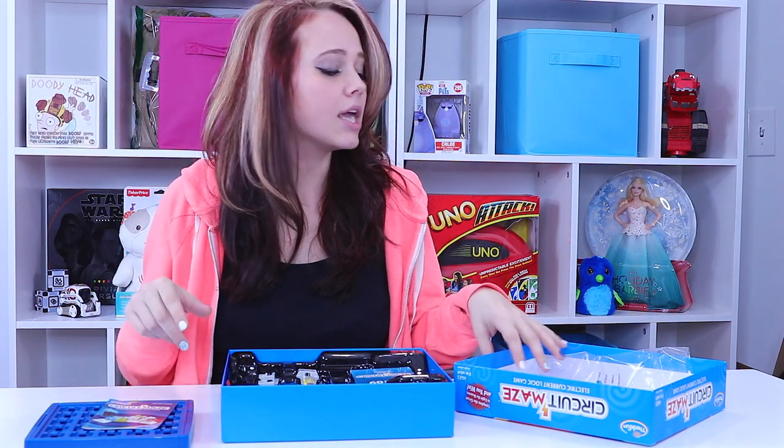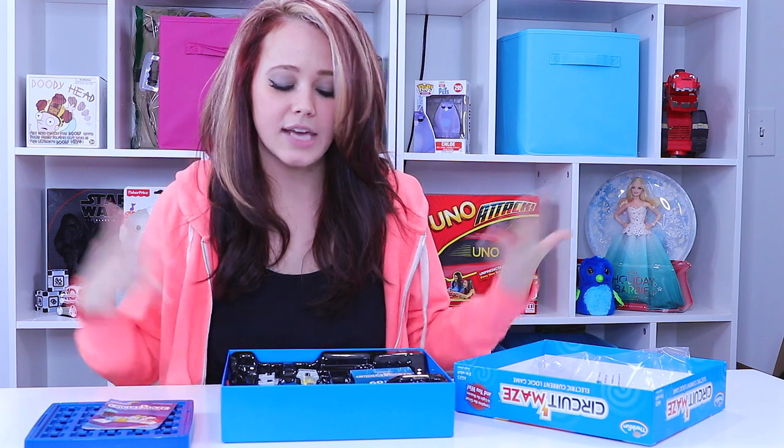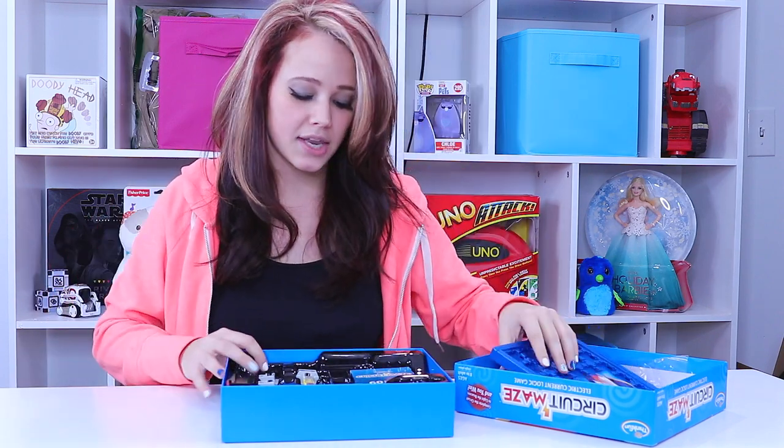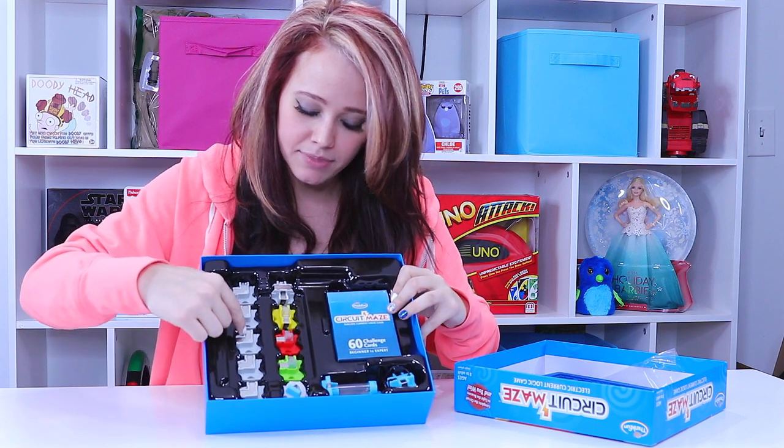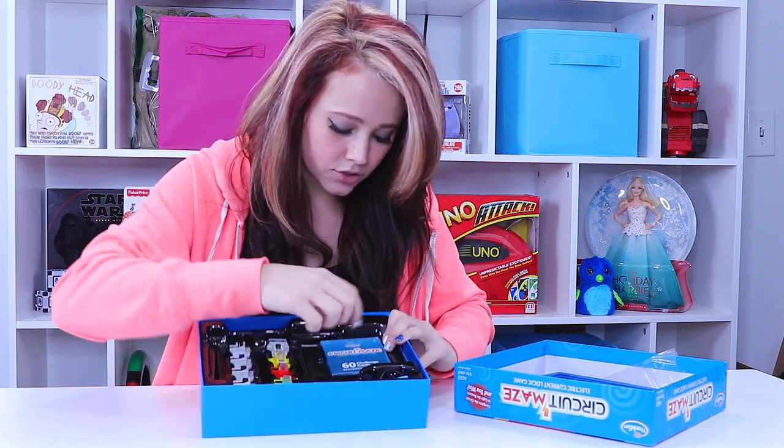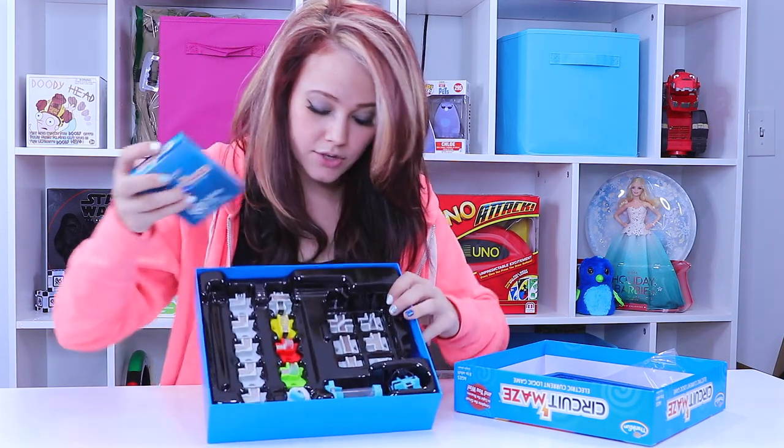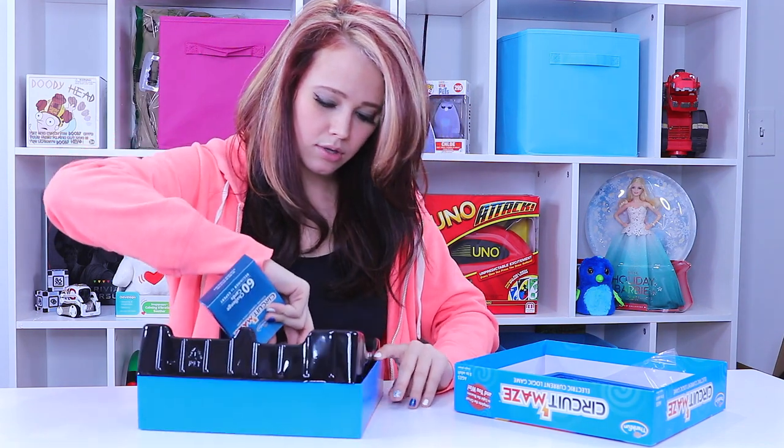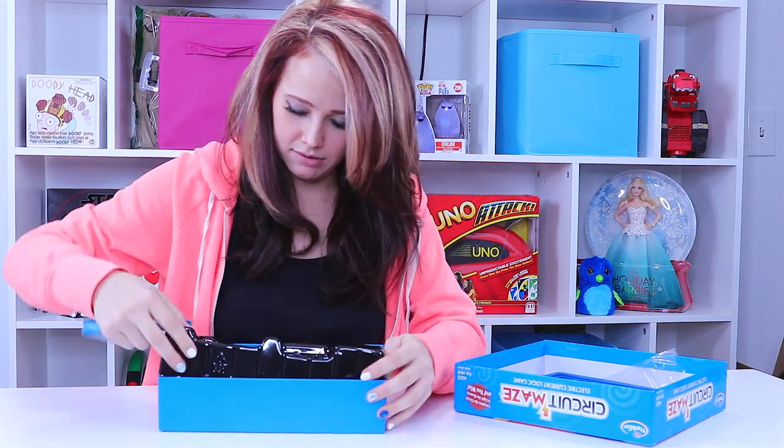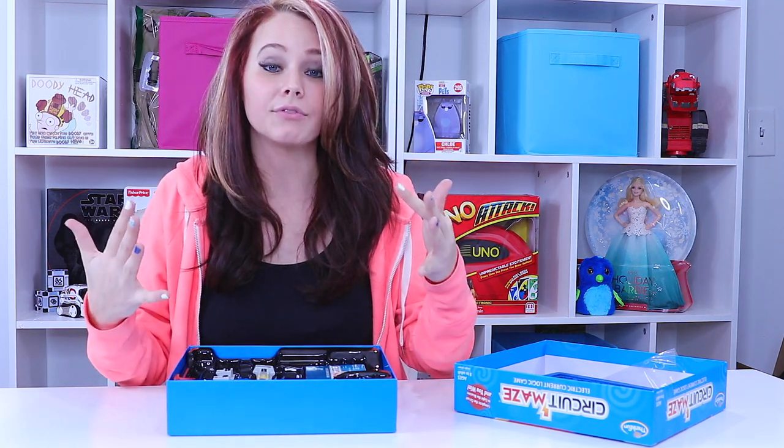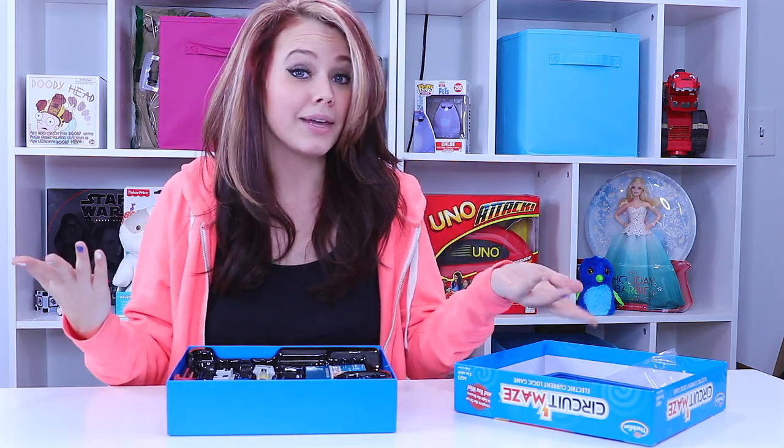Super easy unboxing. I took the shrink wrap off ahead of time and then I just opened it up. So this is your circuit board and then inside are your little electric current blocks and your little cards. Oh, and there's more blocks down there. So I think I have to put some batteries in something to get this started. I'm going to finish getting this unboxed and bring you guys in for a closer look so we can learn to play it together.